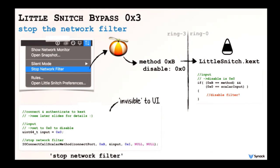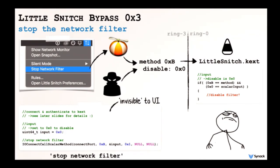Another bypass is to simply turn Little Snitch off. By reverse engineering what happens when the user clicks 'stop network filter,' the user mode component connects and authenticates to the kernel component, then invokes method B with a zero to turn off the firewall or a one to turn it on. We can write our own code to do this. The best part is it's invisible to the UI — if malware turns off the firewall, the status indicator still shows it as on.